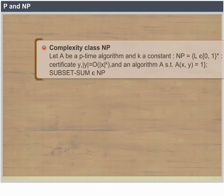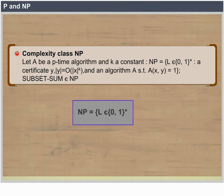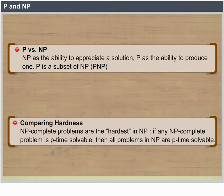Complexity class P contains L ⊆ {0,1}* such that there exists an algorithm A that decides L in polynomial time. PATH ∈ P. Complexity class NP: let A be a polynomial-time algorithm and k a constant. NP contains L ∈ {0,1}* such that there exists a certificate Y with |Y| = O(|X|^k) and an algorithm A such that A(x,y) = 1. SUBSET-SUM ∈ NP. P versus NP: NP has the ability to appreciate a solution while P has the ability to produce one. P ⊆ NP. NP-complete problems are the hardest in NP: if any NP-complete problem is polynomial-time solvable, then all problems in NP are polynomial-time solvable.